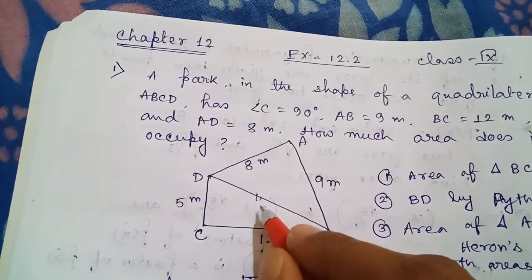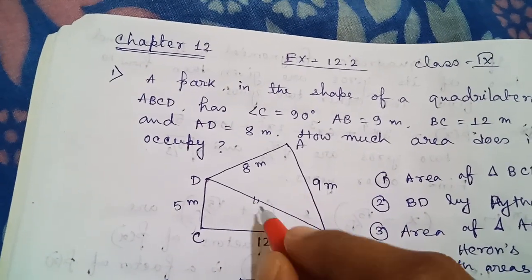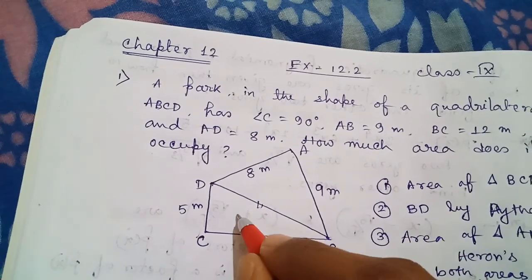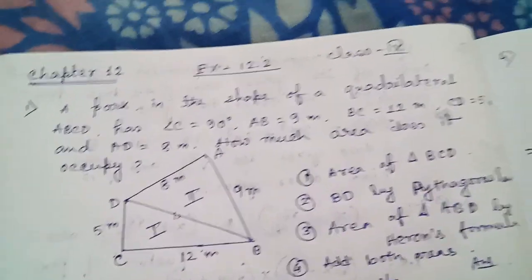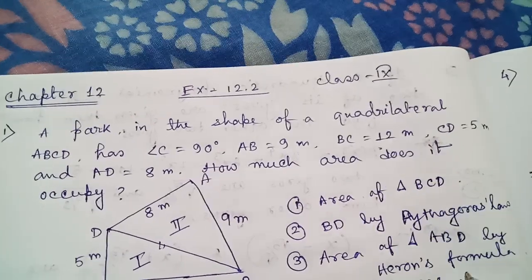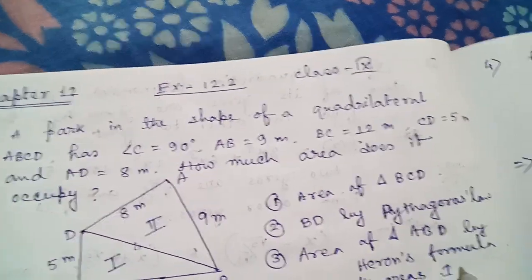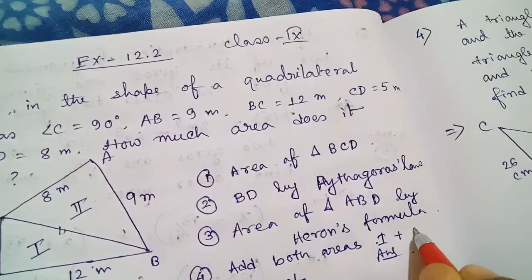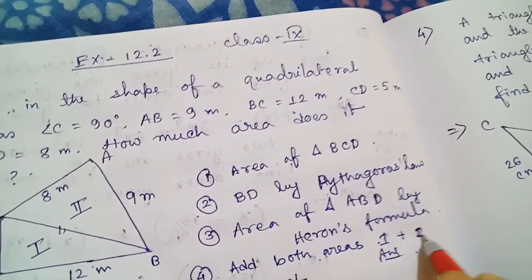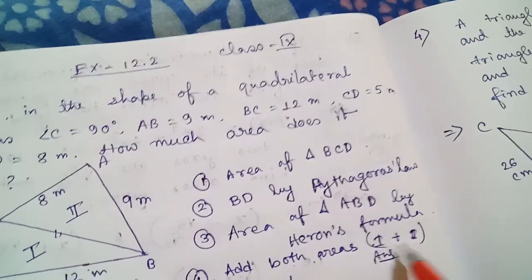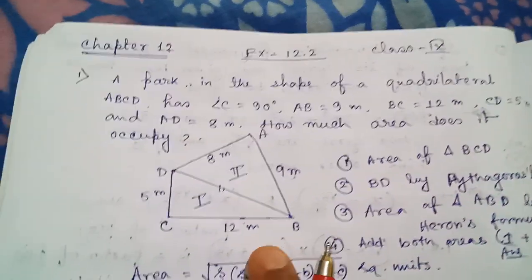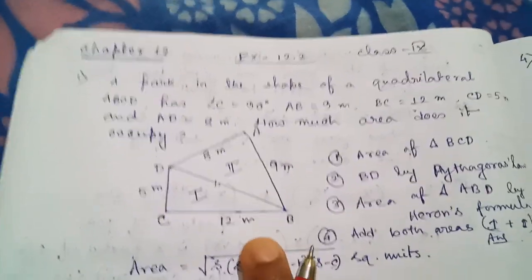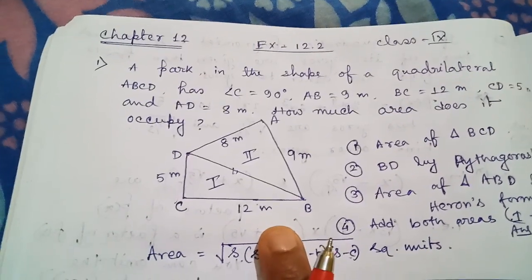So once you find both areas — number one and number two — it is very easy. You just add them together to get the total area. This is clear, students.